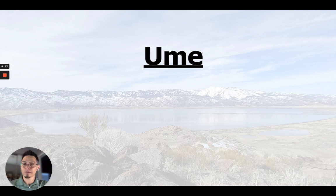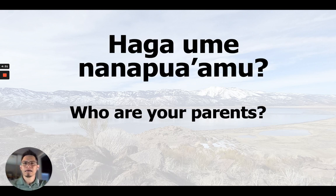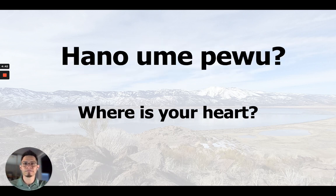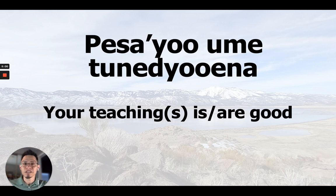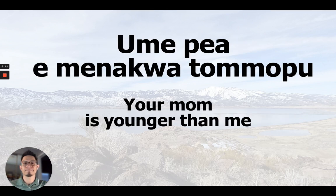Umi is the other word that just means your. How is your heart? Haga umi nanapua'am. Who are your parents? Haga — who? Umi nanapua'am, your parents. This is something you can teach your children when asking them to learn body parts: Hano umipiwu — where is your heart? Pishayu umitinichuina — your teachings are good. Umipiwa'a iminakwatomop — your mom is younger than me.